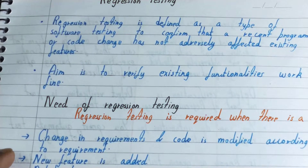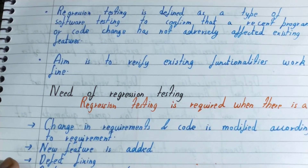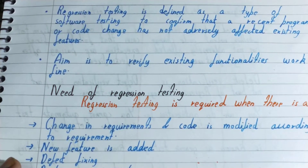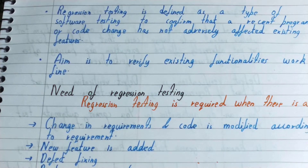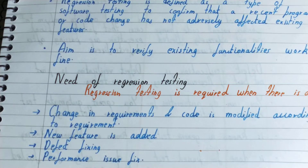The second reason is when a new feature is added — the existing features should also be verified because the code has been changed or altered. Third is defect fixing — whenever a defect is fixed, we need to verify whether that defect still exists in the software or not. Fourth, if there is a performance issue fix, regression testing is done to verify that the performance is fixed.